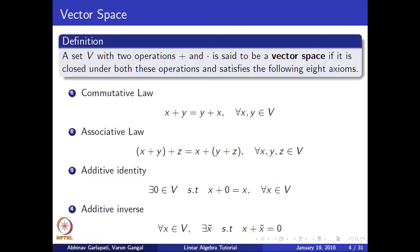Let us look at the axioms. The first is the commutative law: for any two elements x and y from V, x + y = y + x. The associative law states that for any triplet x, y, z, (x + y) + z = x + (y + z). The additive identity law states that there exists a zero element in the set such that adding it to any element gives back the same element.